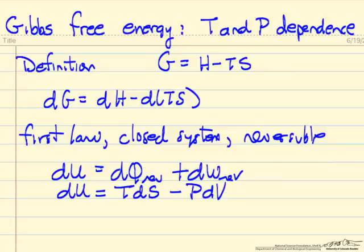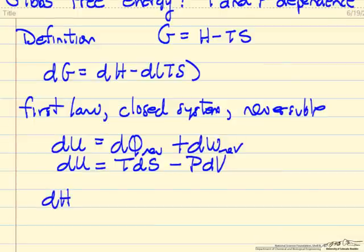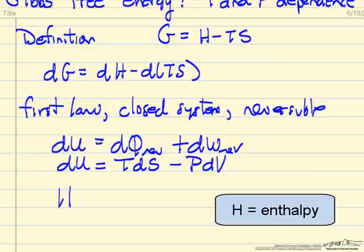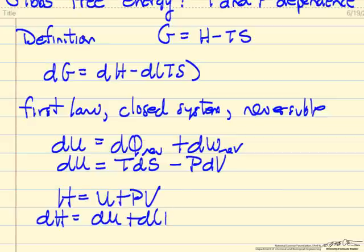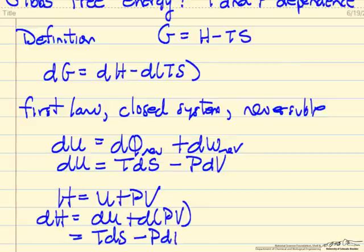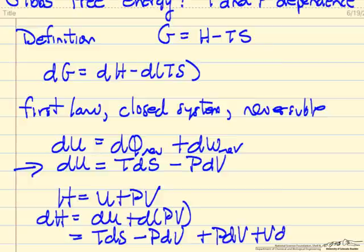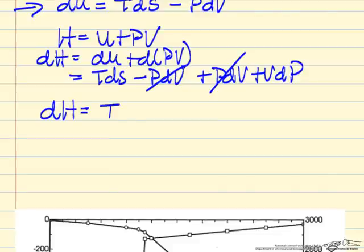To get to Gibbs free energy, let's start with the definition H equals u plus PV. So dH is du plus dPV, so that becomes TdS minus PdV. And then we will use the product rule and we notice that this term cancels with this term. So we have dH as TdS plus VdP.